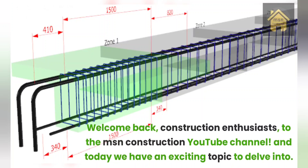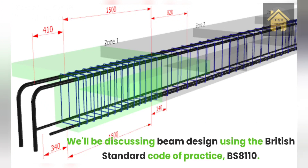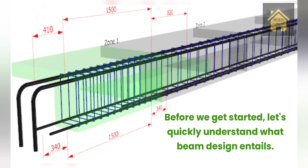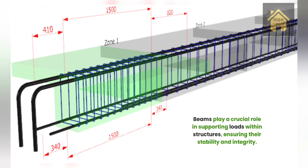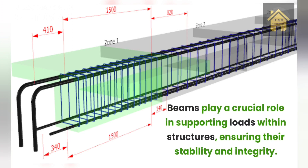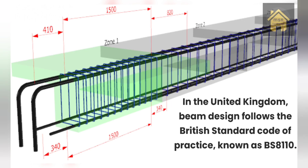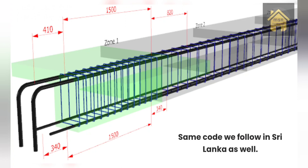Welcome back construction enthusiasts to the MSN Construction YouTube channel. Today we have an exciting topic to delve into — we'll be discussing beam design using the British Standard Code of Practice, BS8110. Before we get started, let's quickly understand what beam design entails. Beams play a crucial role in supporting loads within structures, ensuring their stability and integrity. In the United Kingdom, beam design follows BS8110 — the same code followed in Sri Lanka as well.